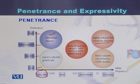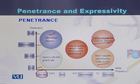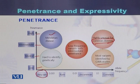Most variants identified by GWAS studies are usually present in common diseases. So in summary, if allele frequency is common then the diseases will be common, while if allele frequency is rare then the penetrance will be high.